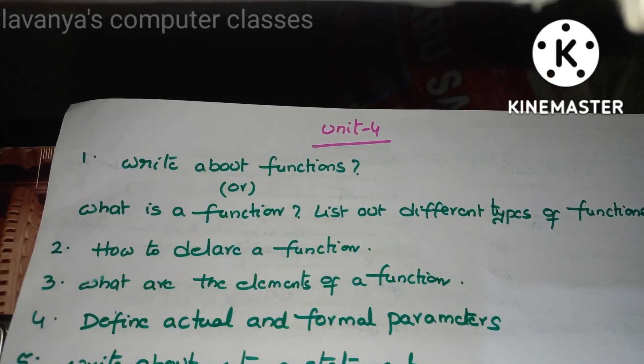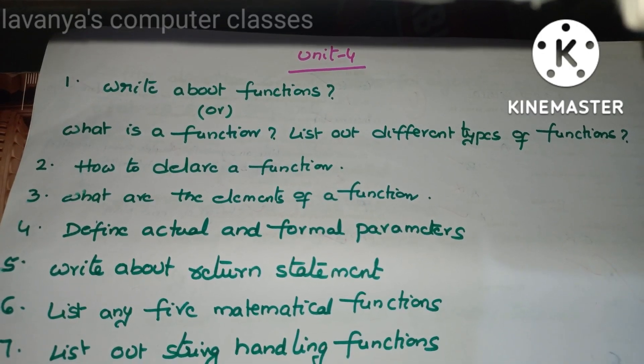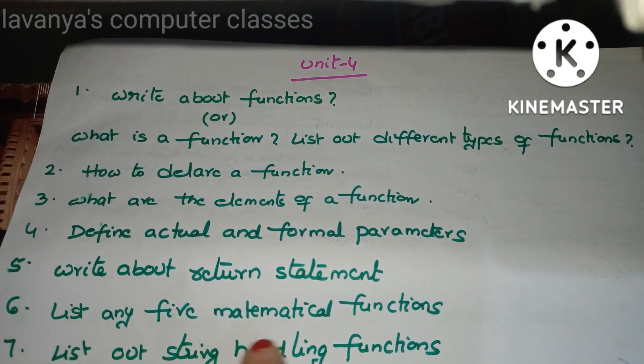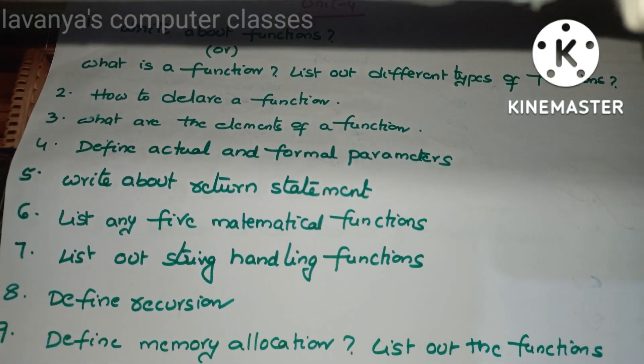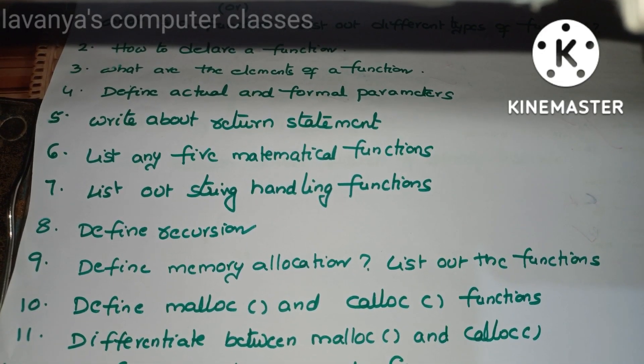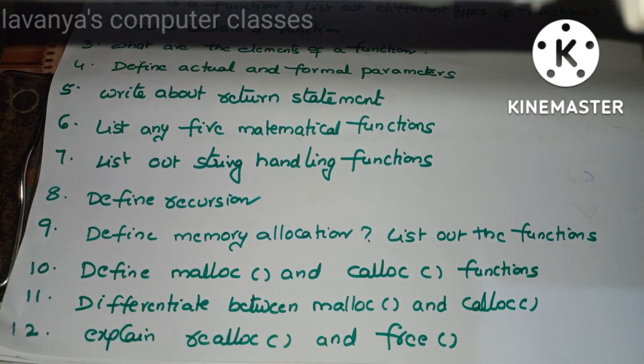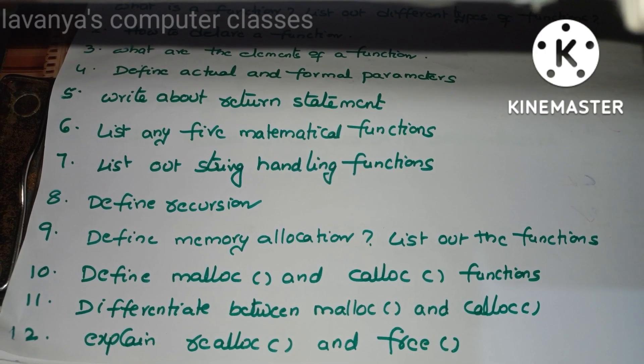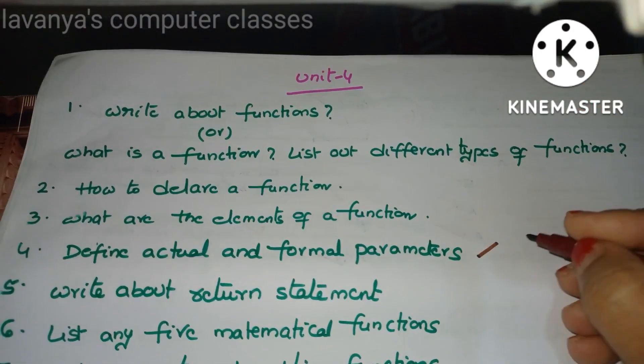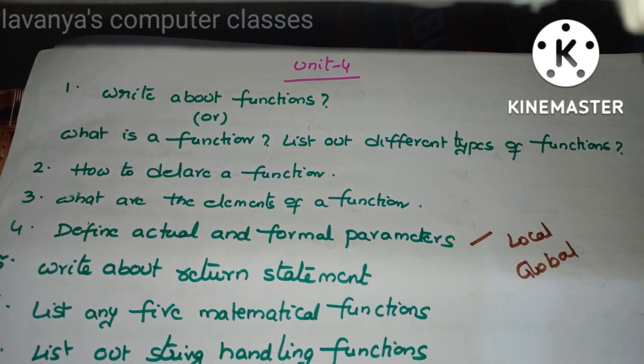Next, Unit 4 important questions: what is a function? List different types of functions or write about the functions. How to declare a function? What are the elements of a function? Define actual and formal parameters and write about return statement. List any five mathematical functions, list some string handling functions, define recursion, define memory allocation, list out the functions. Define malloc and calloc functions. These are coming under memory allocation functions only. Differentiate between malloc and calloc functions. Explain realloc and free functions. Also, actual and formal parameters, and they are asking explain what is local variables and global variables. That is also an important question.